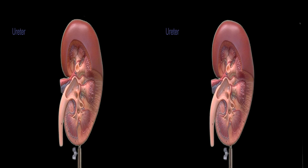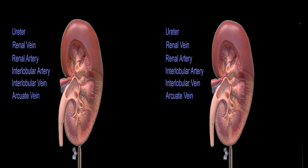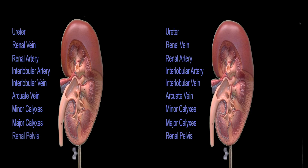Ureter, renal vein, renal artery, intolobular artery, intolobular vein, arcuate vein, minor calyxes, major calyxes, renal pelvis.